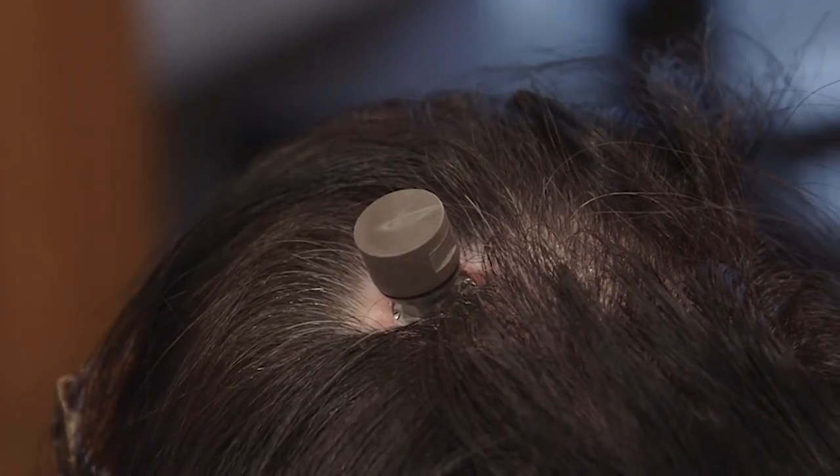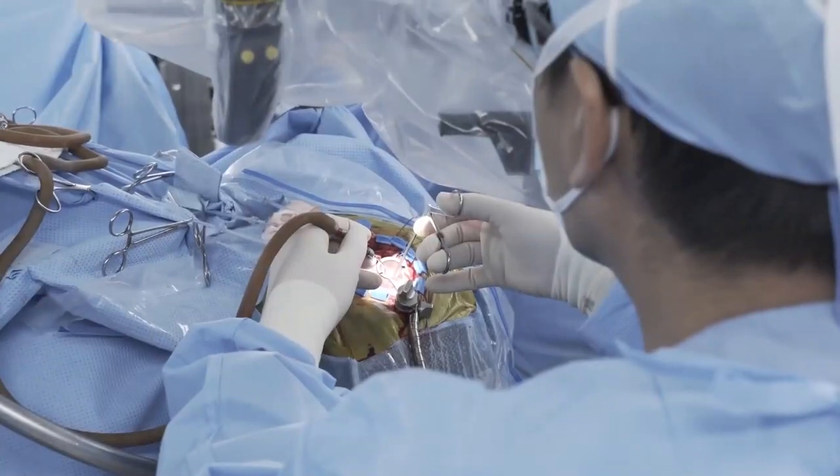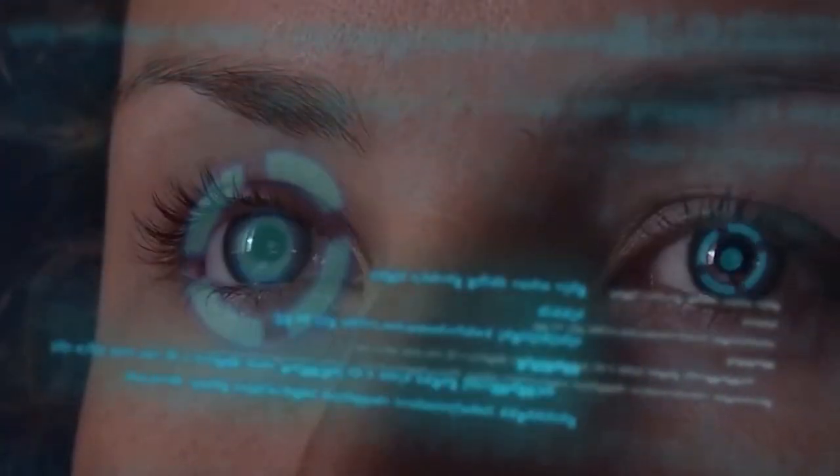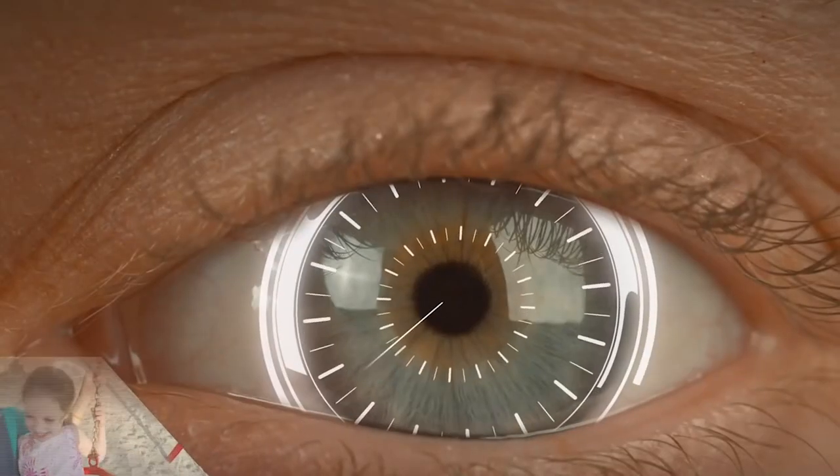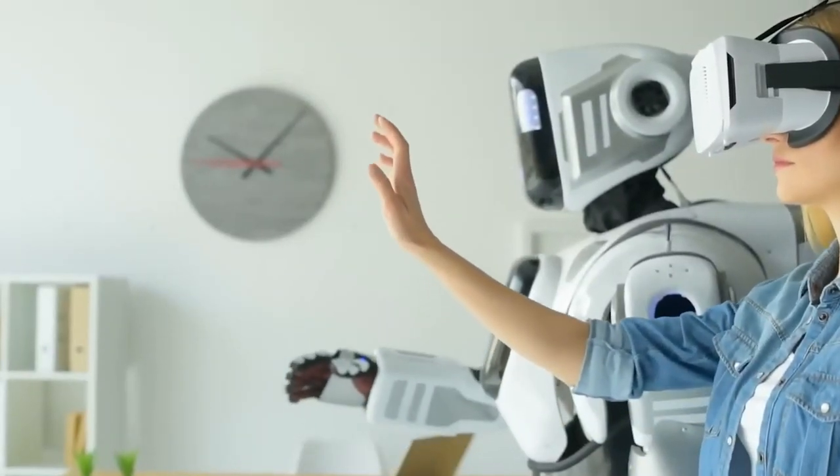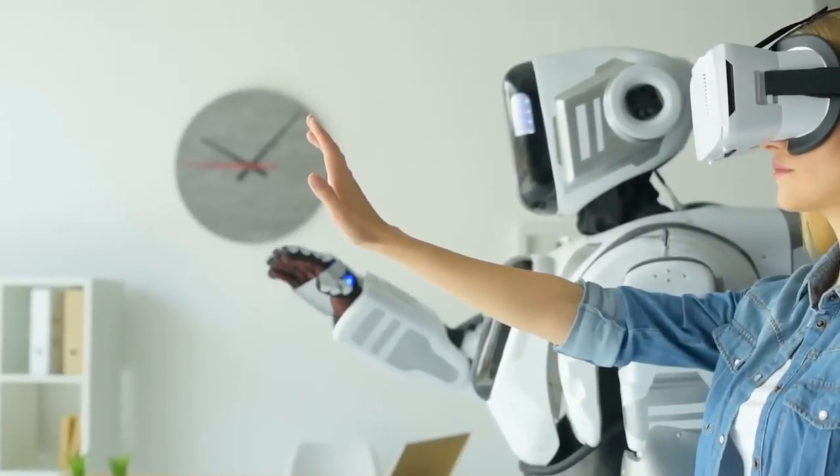It might represent the first step taken by humanity toward immortality. The Neuralink device will offer visual prosthesis in the event of retinal damage or eye injury-related blindness.